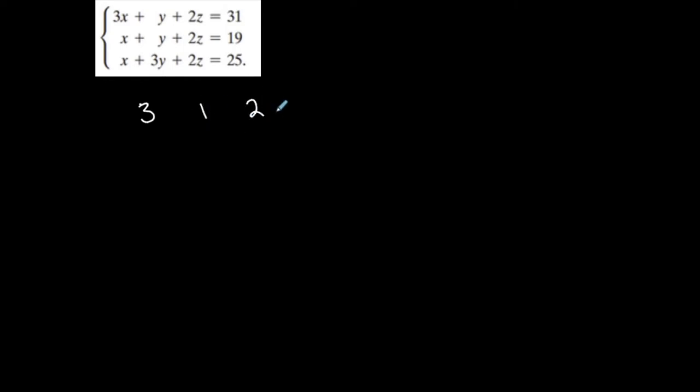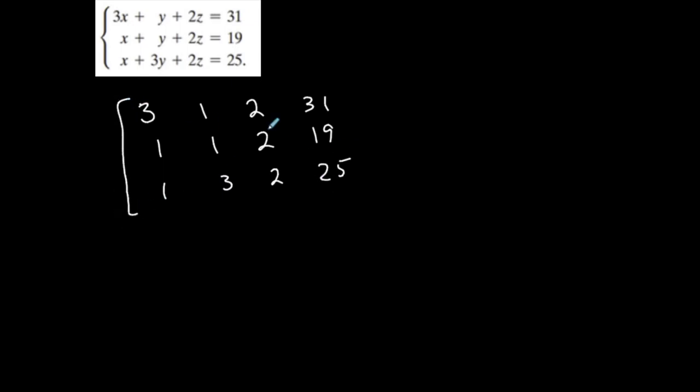We're only allowed to use those three matrix operations. So let's create the augmented matrix. It's already in nice form — my x's, y's, z's, equals signs, and constants. So 3, 1, 2, 31 is my first equation; 1, 1, 2, 19 is my second; and 1, 3, 2, 25 is my third. And now I am in augmented matrix form.